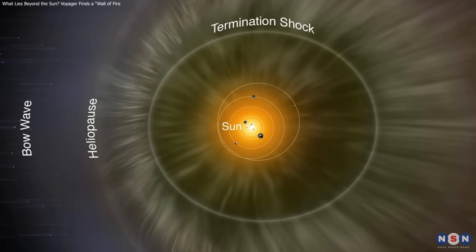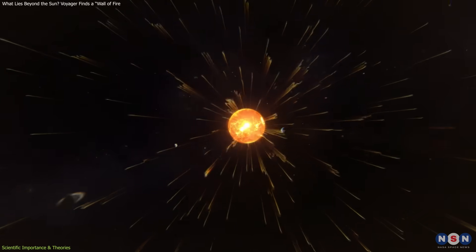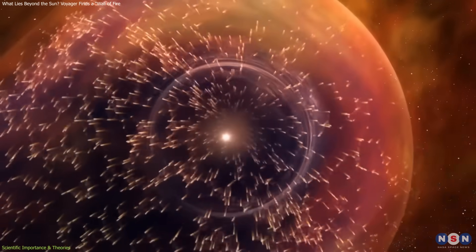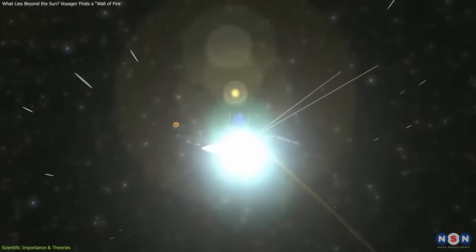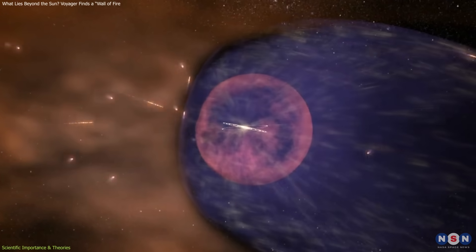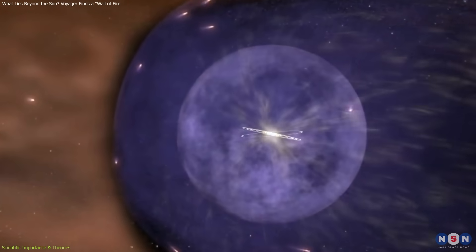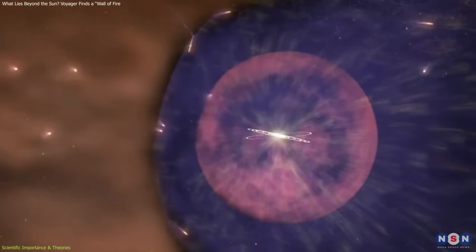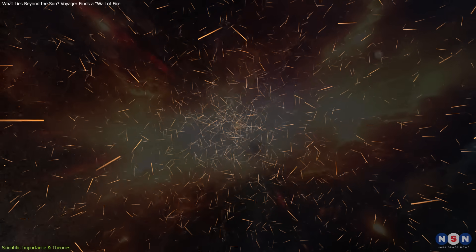Until now, the heliopause was thought to be a relatively static barrier, a shield separating the sun's domain from interstellar space. Voyager's findings show it's anything but static. Instead, it's a dynamic, turbulent interface where solar and galactic forces meet and interact, in ways we're only starting to understand.